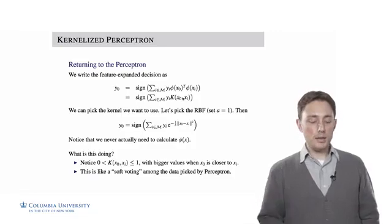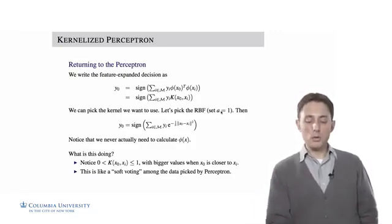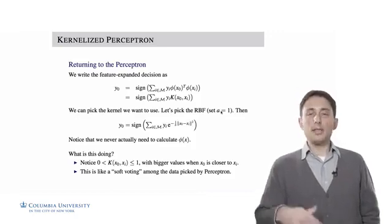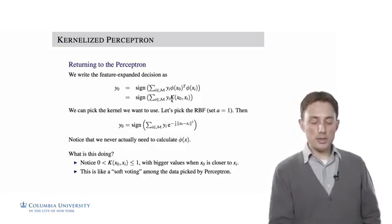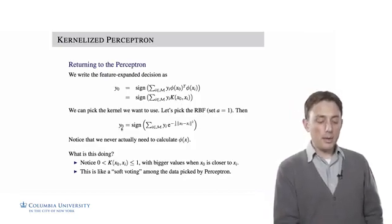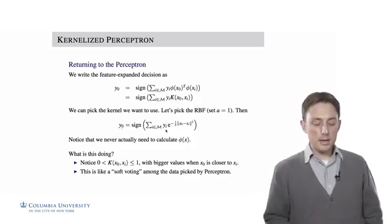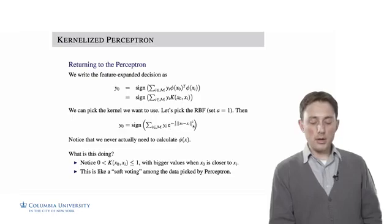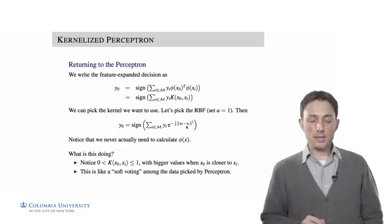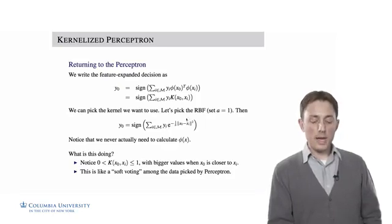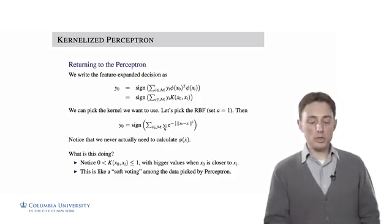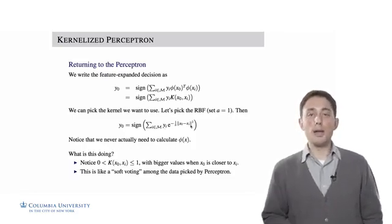Let's pick the radial basis function kernel and set A equals 1. Using the RBF as the kernel, we make our decision as the sign of the sum of the kernel function between the new point x-naught and an old point x-i in the set M, times the label of x-i, which is either plus 1 or minus 1.